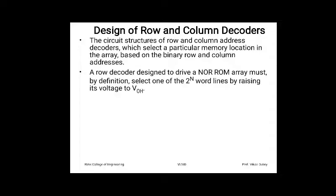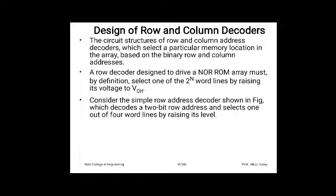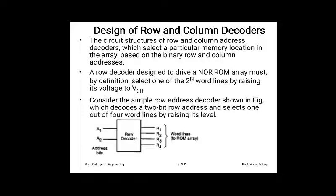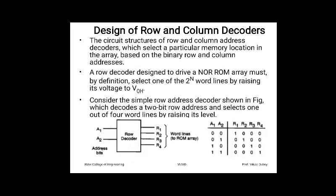When a particular word line is driven to VOH, the transistor turns on and we can read the data lines. Consider a simple row address decoder for a 2-bit row address: with 2 inputs we get 4 possible outputs, so a 2-to-4 decoder is used. Inputs A1 and A2 select one of outputs R1–R4: 00 selects R1, 01 selects R2, 10 selects R3, and 11 selects R4.